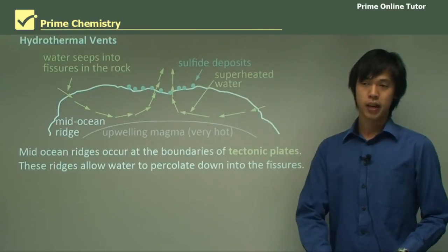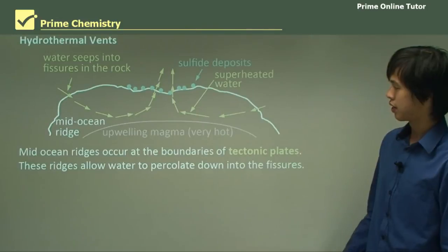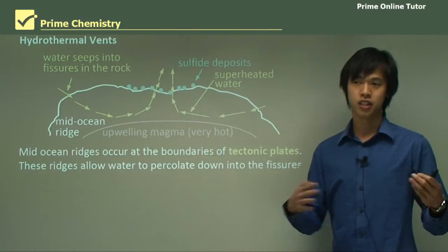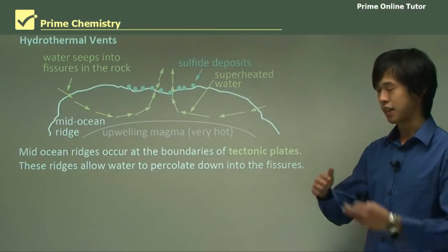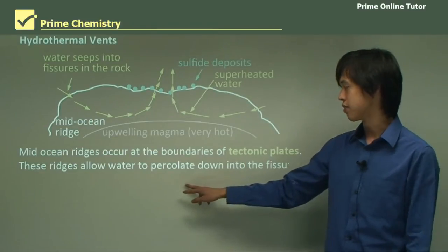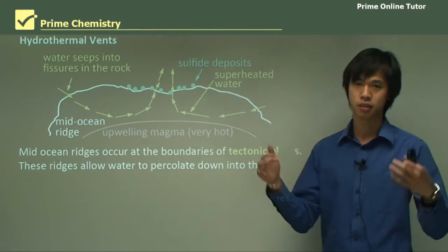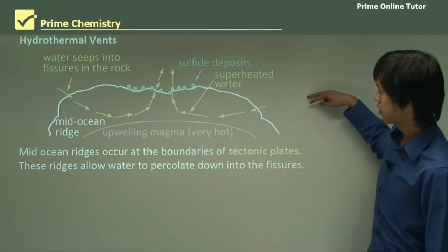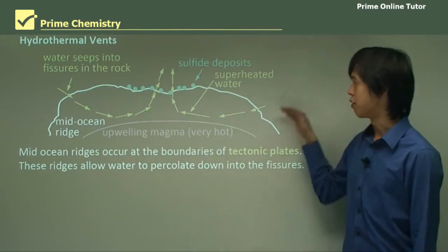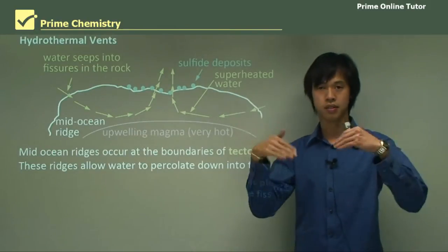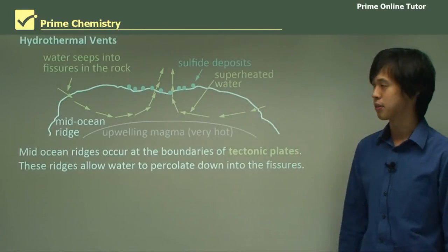A more complicated mechanism for getting salts into the water is the hydrothermal vent. Mid-ocean ridges are the meeting place of tectonic plates, the boundaries. And these ridges allow water to percolate into the fissures. Percolate just means to seep in. You can see here there might be a fissure through this rock and the water can actually seep into it. The water gets into those small spaces between the rocks.